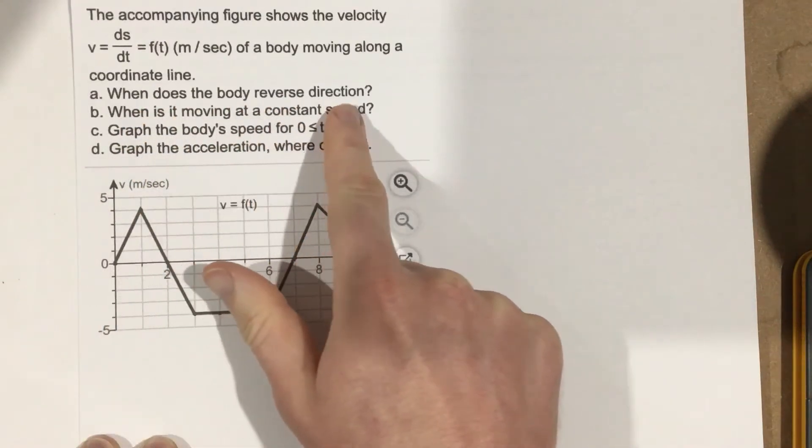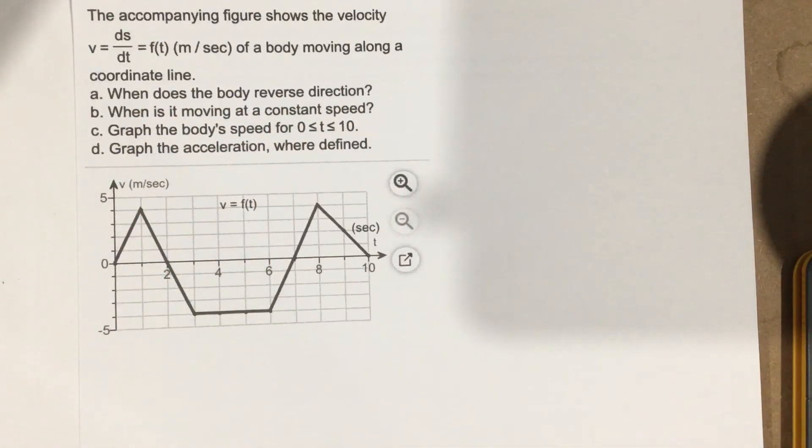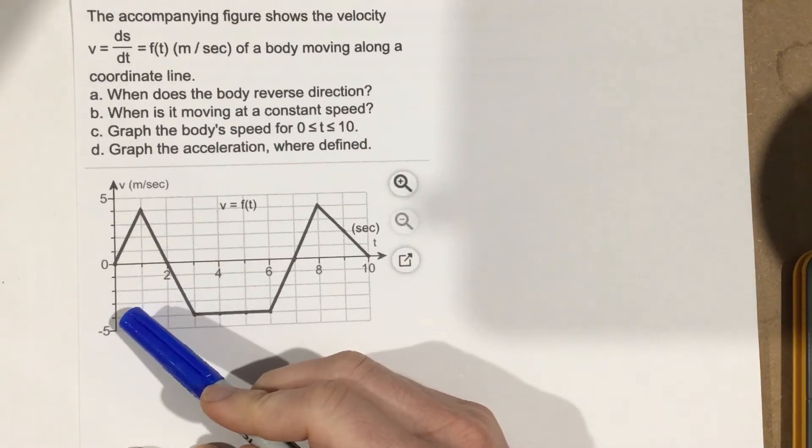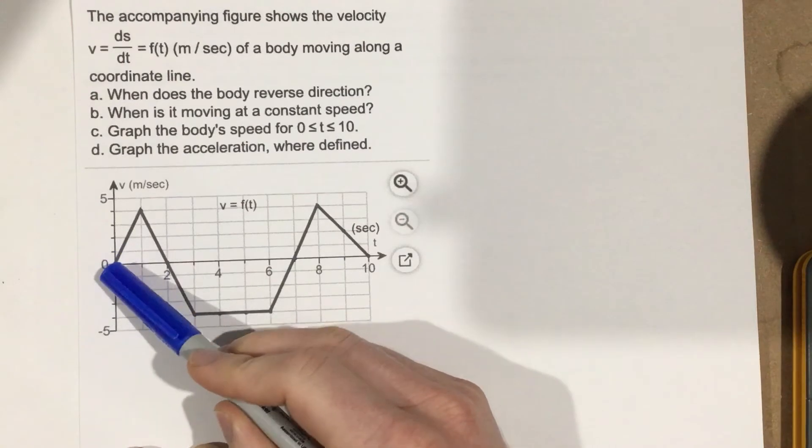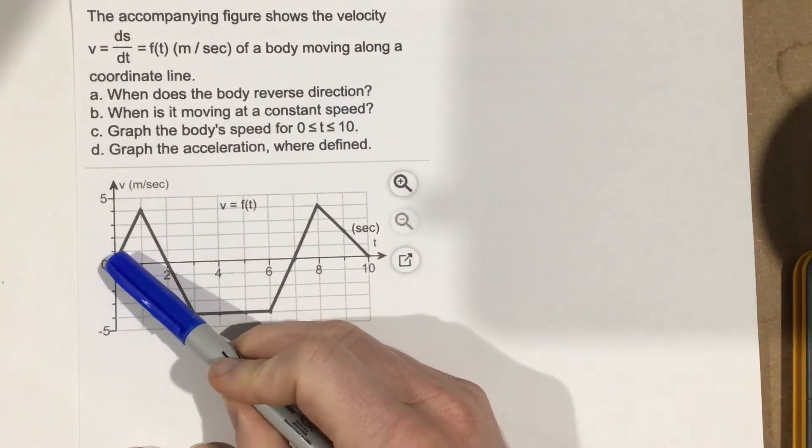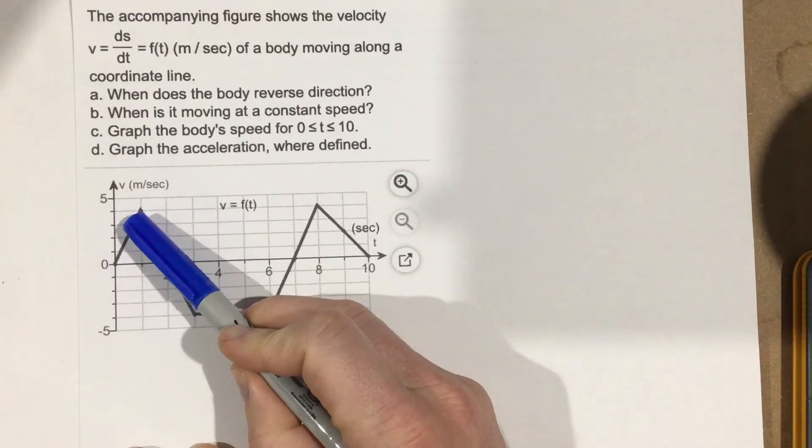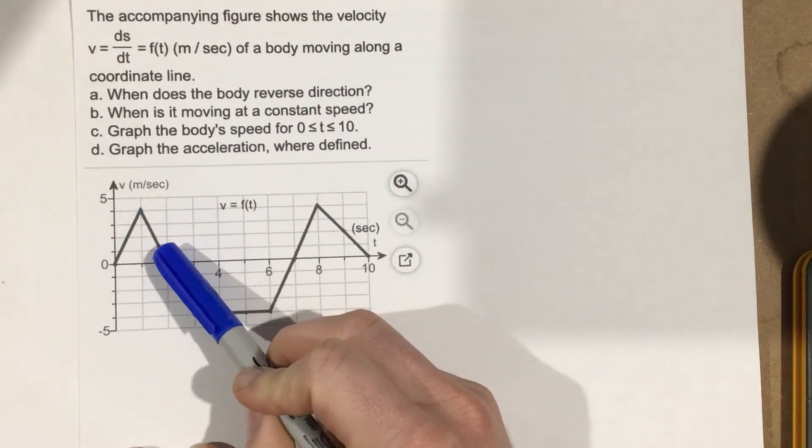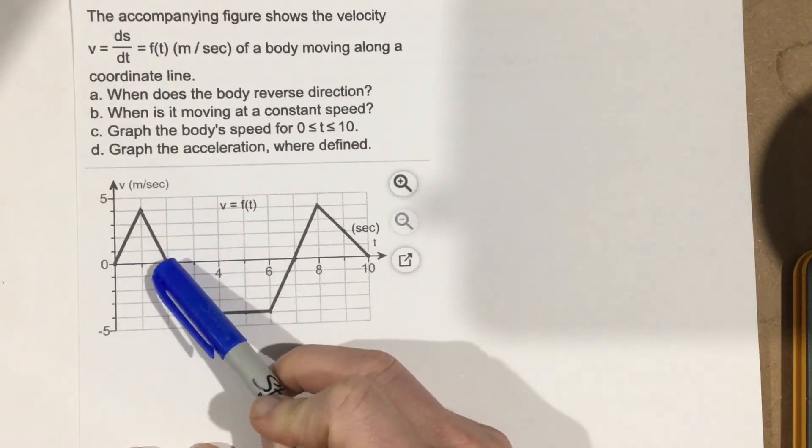When does the body reverse direction? Let's take a look at where it reverses direction. We know that a body reverses direction anytime its velocity hits zero. If we look, we start at velocity zero, it's increasing velocity till it gets up to four meters per second, now it's decreasing velocity here, and then when velocity hits zero, that's when it's going to switch direction.